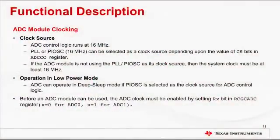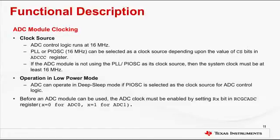Before we talk about the other features of the ADC, we will first take a look at ADC clocking. The ADC module is clock-gated; that is, before the ADC module can be used, the clock must be enabled by setting the RX bit in the run mode clock gating register. The ADC control logic runs at 16 MHz. The clock source can be selected by setting the clock source bit in the ADC clock source register — the clock source can be PLL or precision internal oscillator. Otherwise, the system clock must be at least 16 MHz. To reduce overall current consumption, the ADC can be operated in deep sleep mode with the precision internal oscillator selected as a clock source.